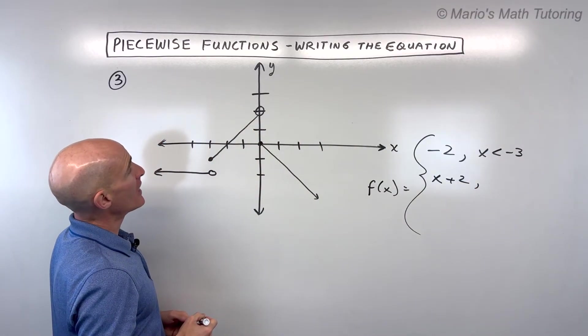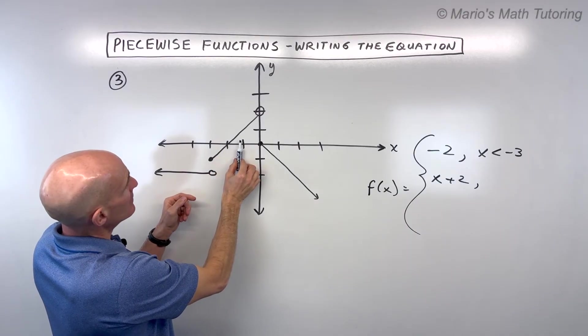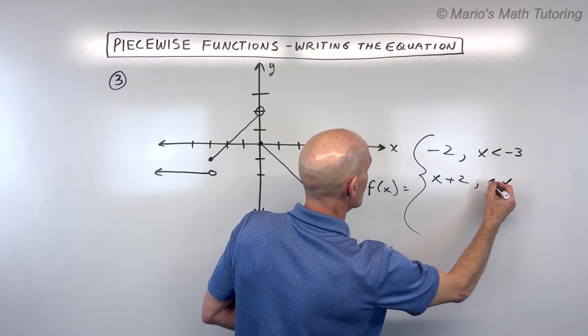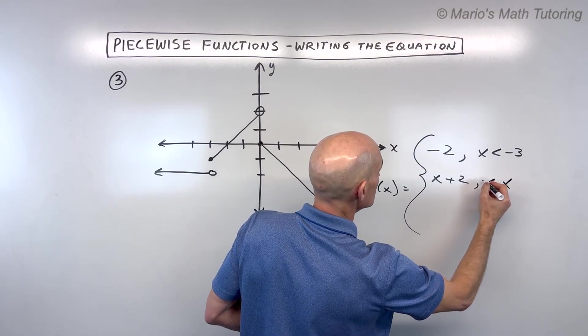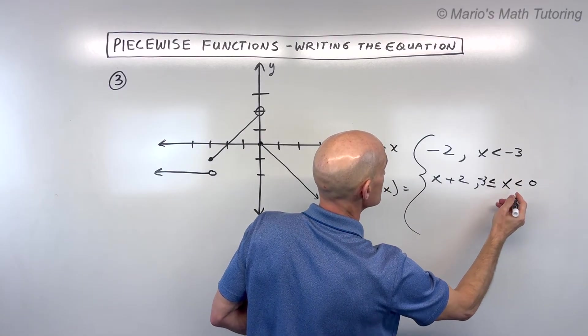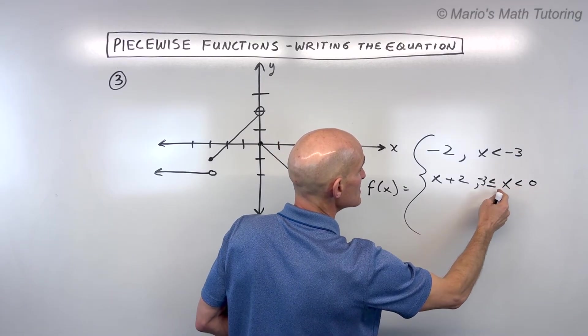And that's in between negative 3 and 0. So that's going to be x is greater than or equal to negative 3 and less than 0. So we have to write this as a compound inequality. x is in between negative 3 and 0.